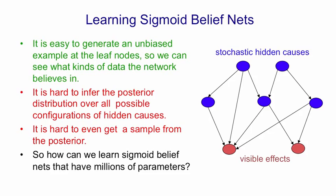Notice this is a very different regime from the one normally used with graphical models. There they have interpretable models, and they're trying to learn dozens or maybe hundreds of parameters — they're not typically trying to learn millions of parameters.